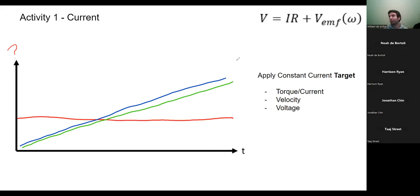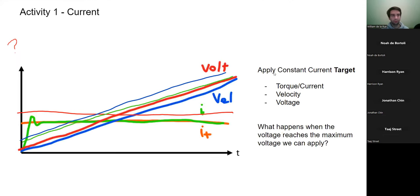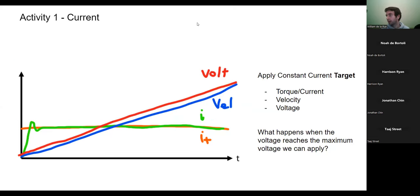This might seem like baby steps but it's actually really important for understanding what's going on later. For example, when running the velocity loops you can be applying zero torque but still have a non-zero quadrature voltage, yet there is zero current flowing through the motor. The reason is that the back EMF is generating a voltage that's equaling it.